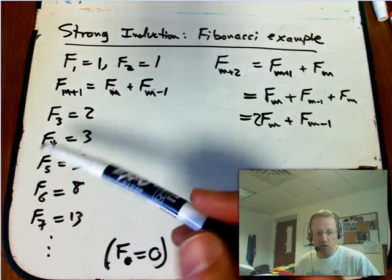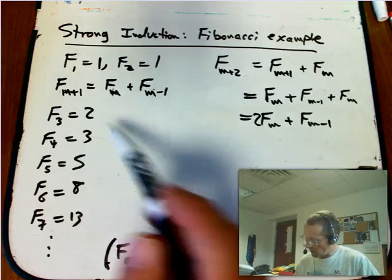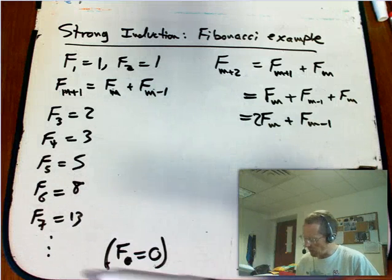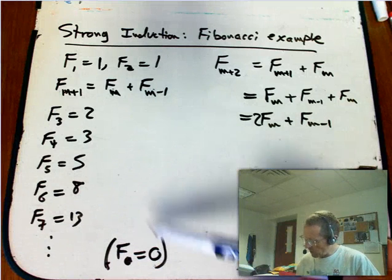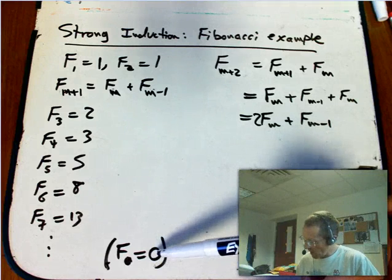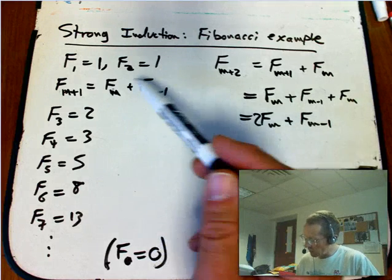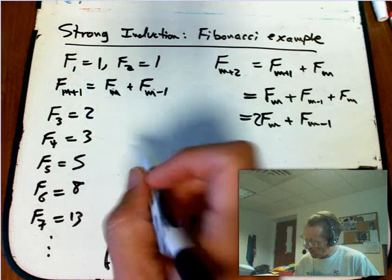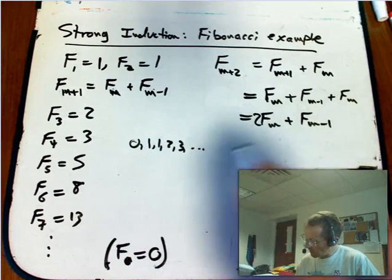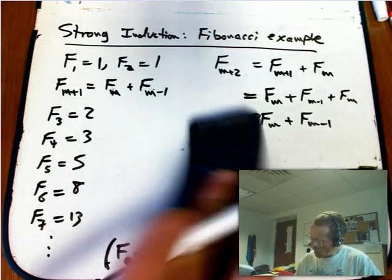It can be really convenient to start the sequence with 0, with F sub 0, as with a lot of sequences like powers and things like that, and factorials. It makes sense to define it for 0, and it fits the pattern if you define F sub 0 equals 0. Because then 0 plus 1 equals 1, so 0, 1, 1, 2, 3, etc. It makes perfect sense.